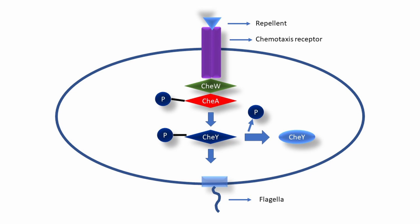In E. coli, the binding of a repellent increases the activity of the receptor, which binds CheW — the adapter protein — and CheA — the sensor protein that acts as a histidine kinase — thereby stimulating CheA to phosphorylate itself on the histidine. CheW is the adapter protein and CheA is the sensor protein. CheW results in the phosphorylation of CheA on the histidine domain, and CheA quickly transfers the covalently bound high-energy phosphate directly to the aspartate of CheY — the response regulator — to generate CheY-phosphate.